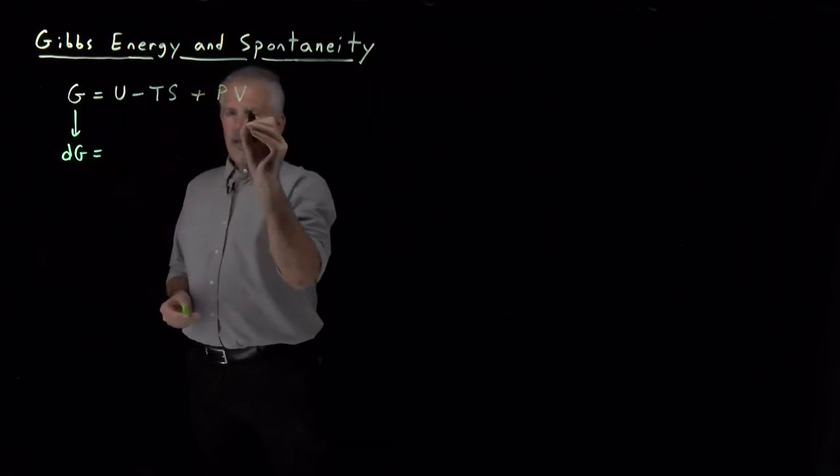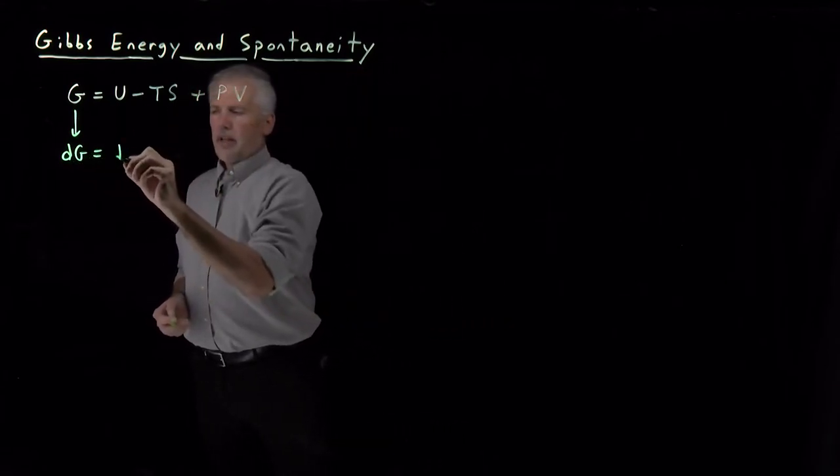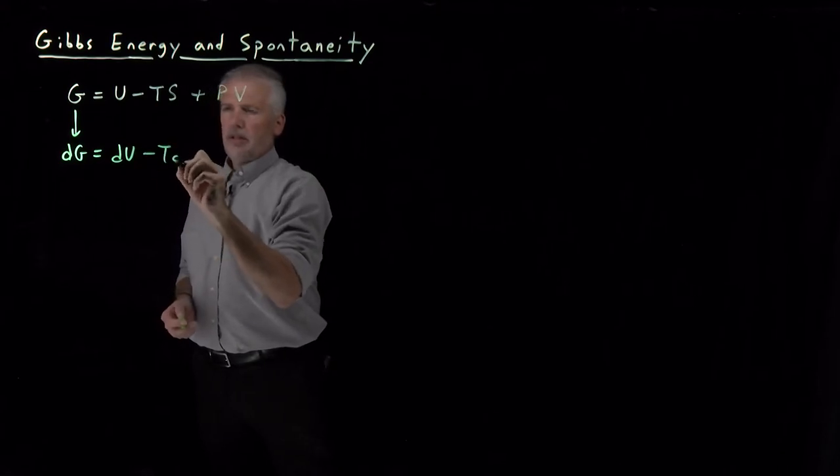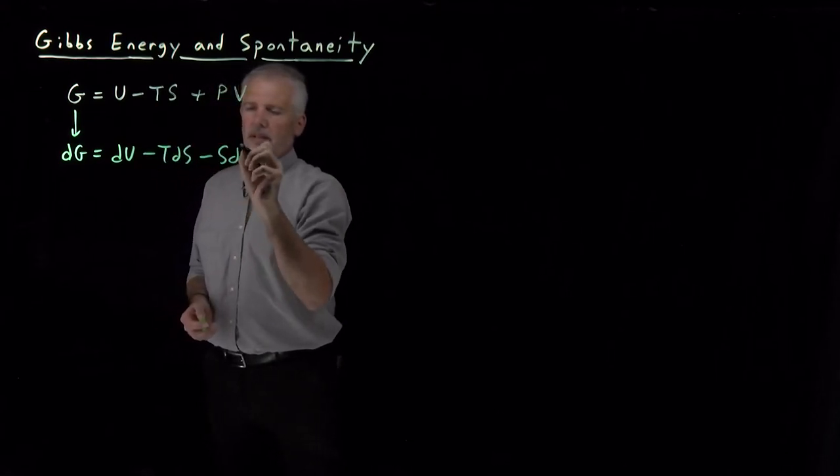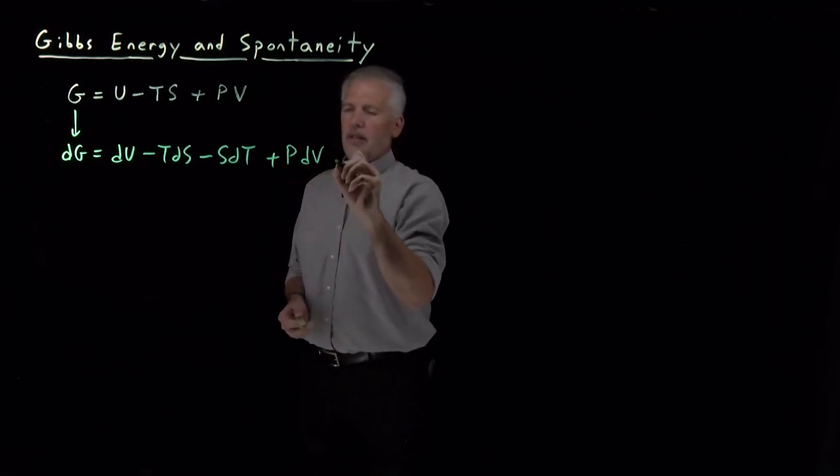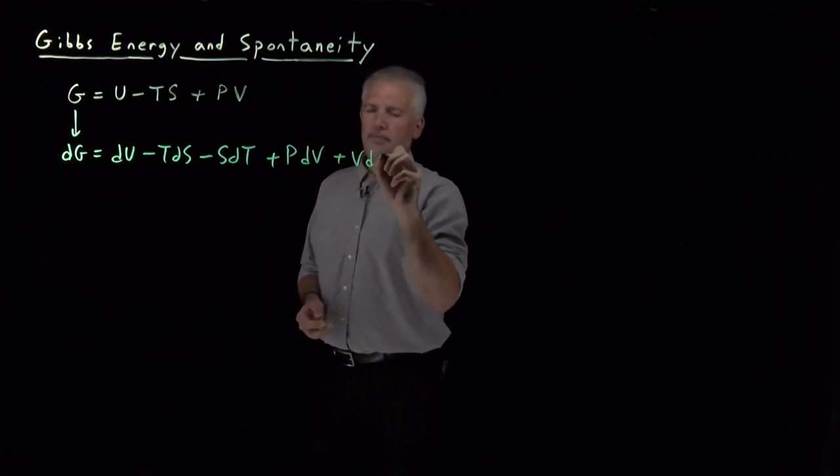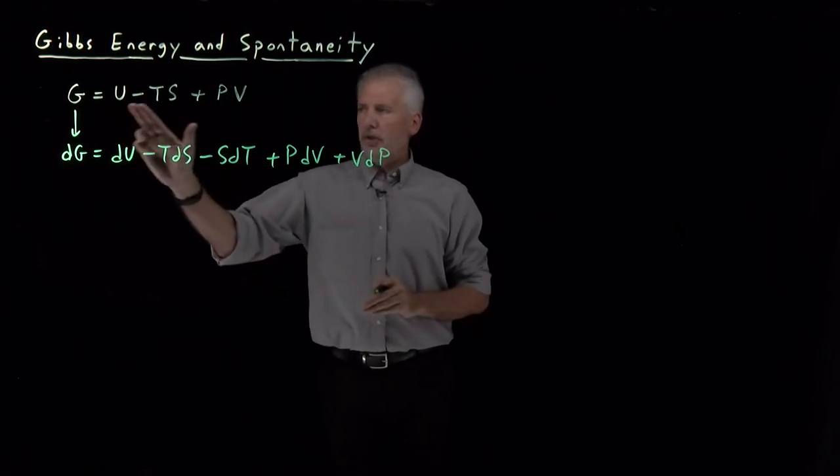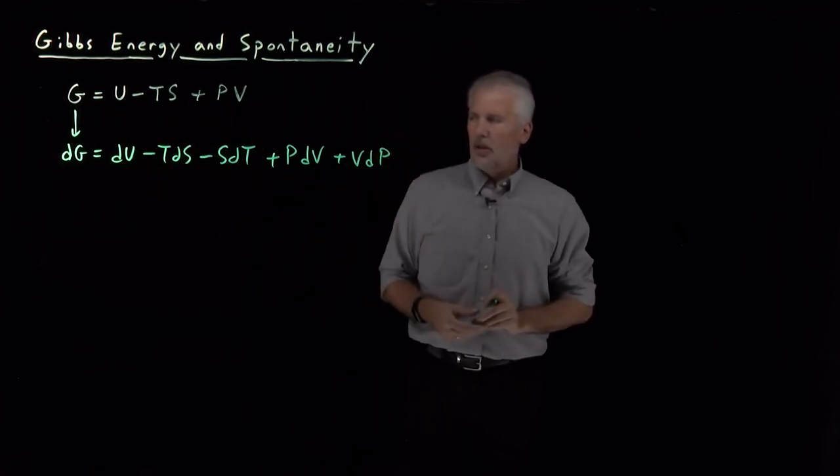Taking the differential of the terms on the right, we get dG = dU - TdS - SdT + PdV + VdP. Having taken the differential of each of these terms, we get this long expression.